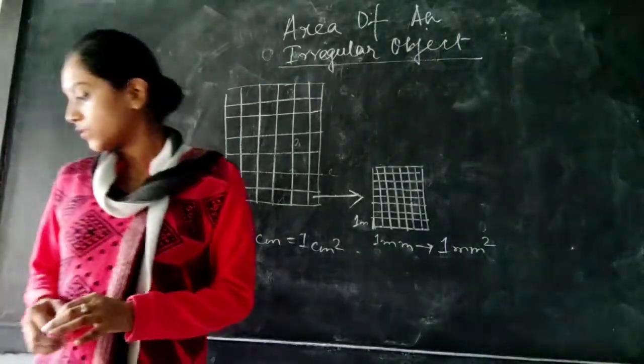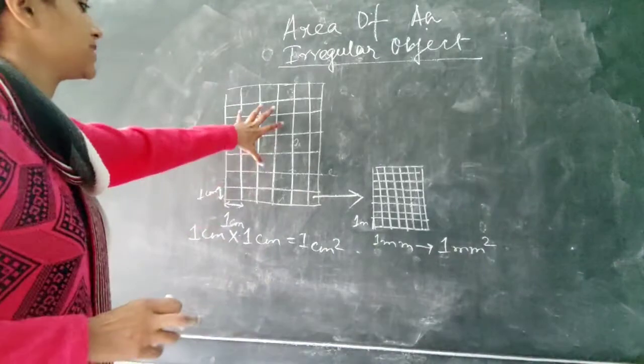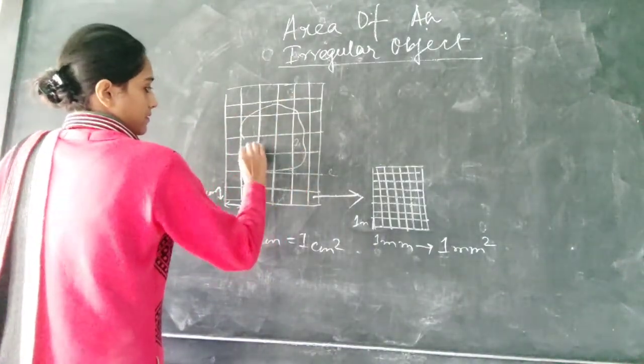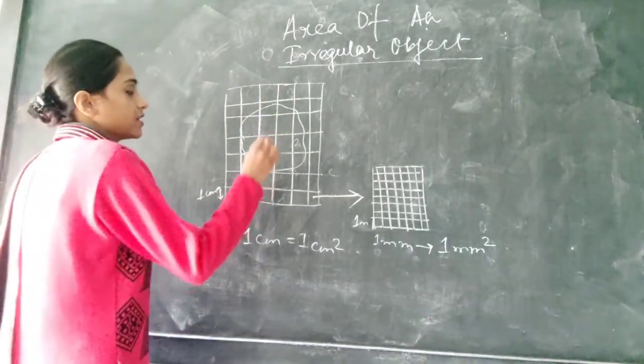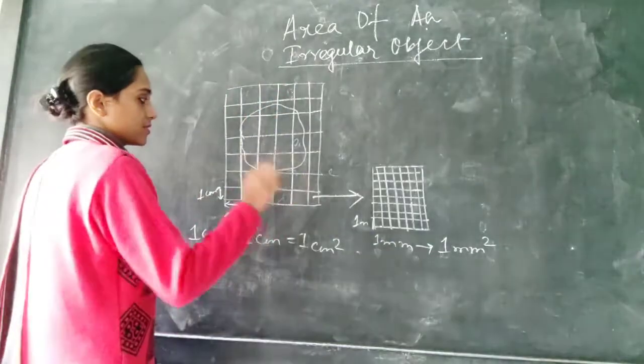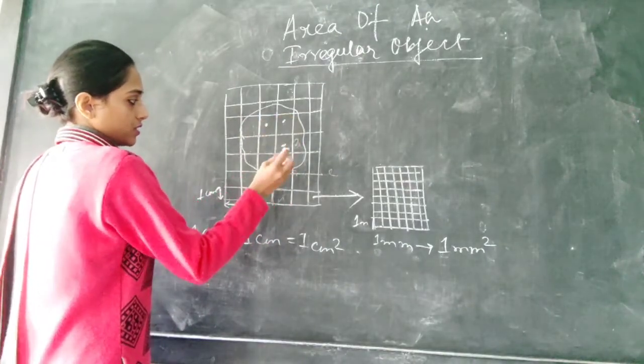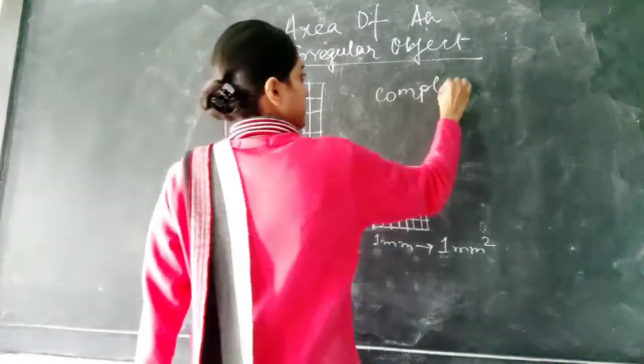So how will you take the measurement of the irregular object? You place it over the graph. Suppose this is the measurement it is. You will take the complete box. 1, 2, 3, 4. So 4 complete boxes are there.